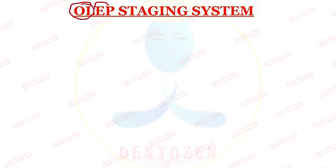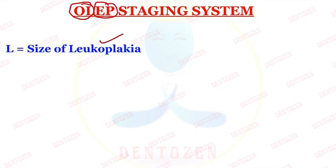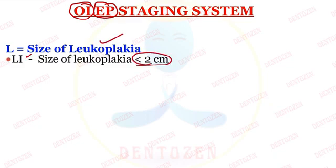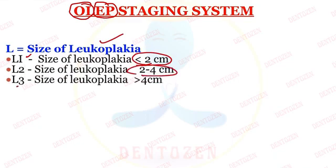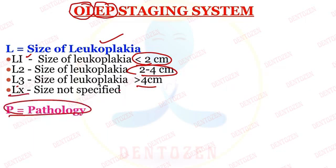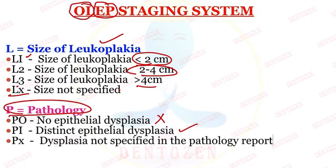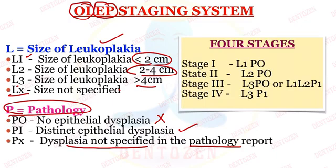Next is the OLEP staging system for leukoplakia — OL stands for oral leukoplakia, EP for epithelial pathology. Two factors are used: L (size of the leukoplakia) and P (presence of pathology/dysplasia). L1 is less than 2 cm, L2 is 2–4 cm, L3 is more than 4 cm, and LX when size is not specified. P0 means no epithelial dysplasia, P1 means distinct epithelial dysplasia, PX means dysplasia is not specified. Based on L and P, four stages are assigned: Stage 1 = L1P0; Stage 2 = L2P0; Stage 3 = L3P0 or L1/L2P1; Stage 4 = L3P1.